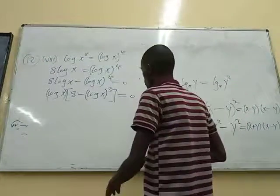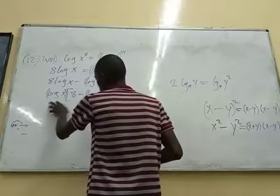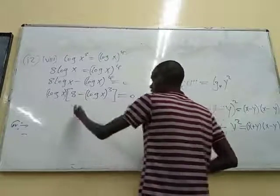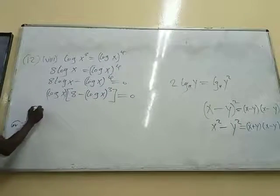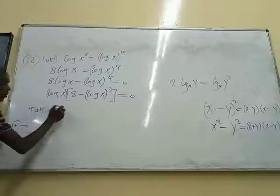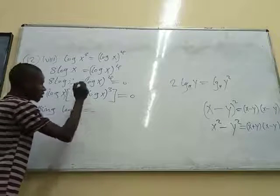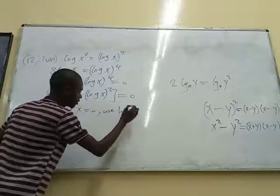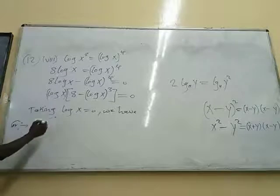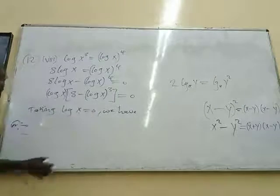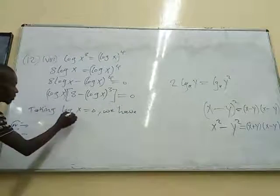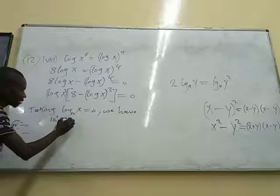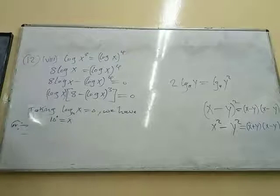So here what we can do is, if you are dealing with polynomials, you can call them 0. So we equate each of them to 0. The first one we get, we say, taking log x is equal to 0. So how do we convert this to exponential? We know the base here is 10. So we're going to have 10 raised to power 0 being equal to x. So 10 raised to power 0 is 1.